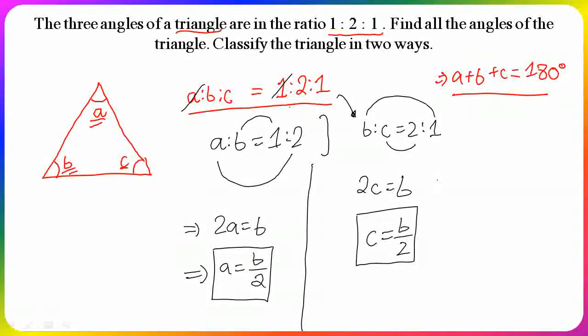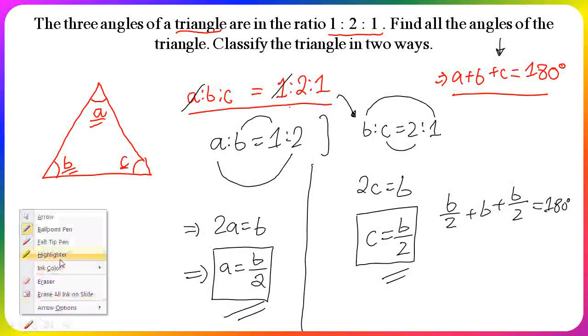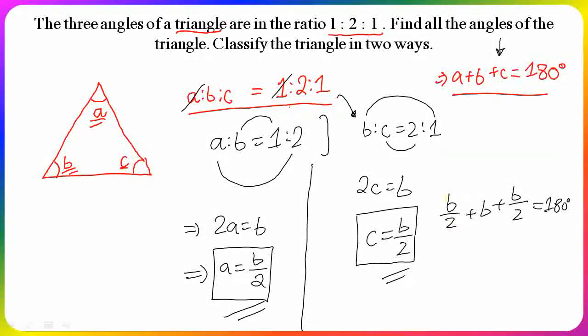Now, using the formula A + B + C = 180 degrees and substituting the values of A and C, we get B/2 + B + B/2 = 180 degrees. This has only one variable, B.